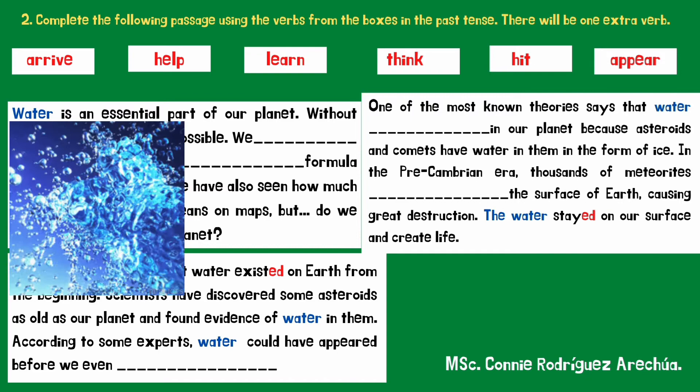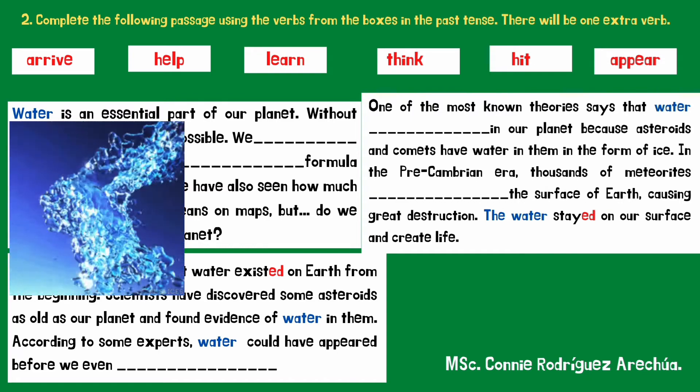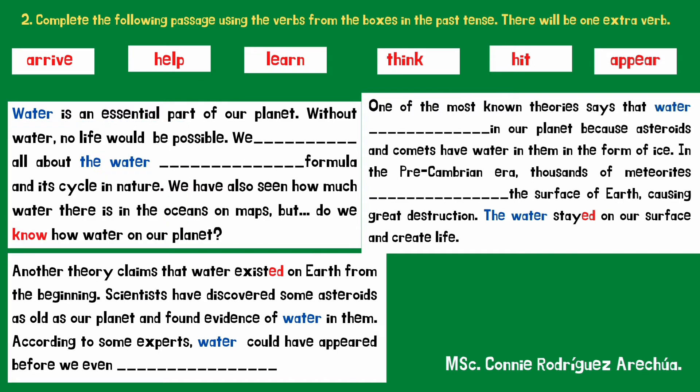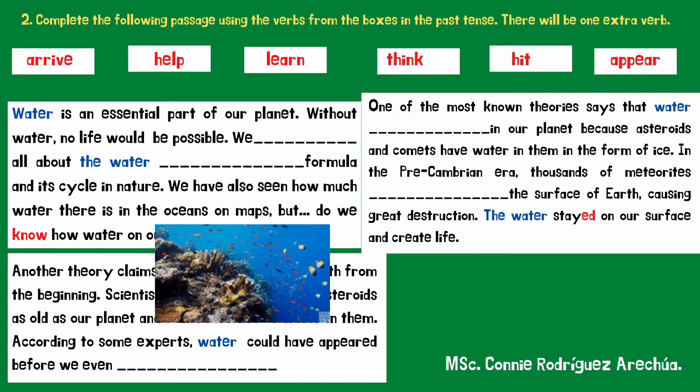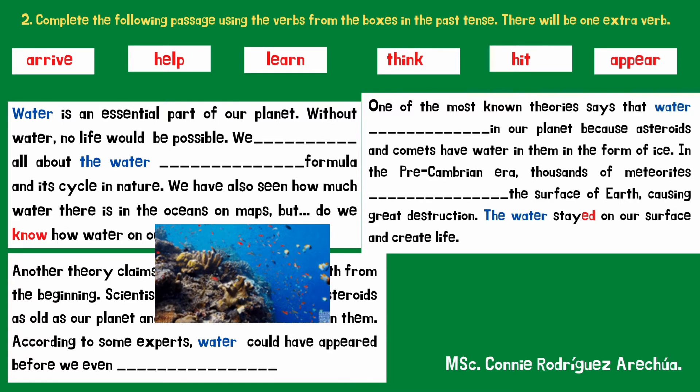Water is an essential part of our planet. Without water, no life would be possible. We all learned about the water formula and its cycle in nature. We have also seen how much water there is in the oceans on maps. But do we know how water appeared on our planet?